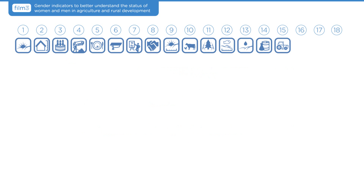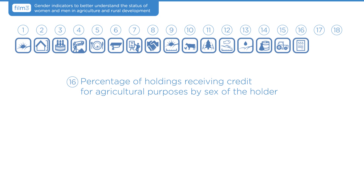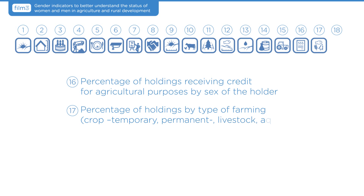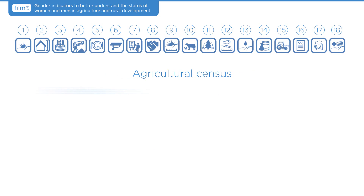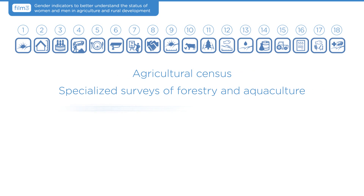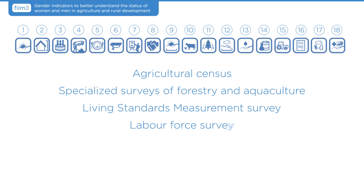The final three indicators are: 16. Percentage of holdings receiving credit for agricultural purposes by sex of the holder. 17. Percentage of holdings by type of farming — crop, temporary, permanent, livestock, aquaculture, and forestry — and sex of the holder. 18. Percentage of holdings with other gainful activity in the household by type of activity and sex of the holder. These indicators relate to the type of farming undertaken by female and male holders and the total income of the holder's household including all income sources. Most data needed can be obtained from the Agricultural Census, specialized surveys of forestry and aquaculture, and sometimes from the Living Standards Measurement Survey, Labour Force Survey, Household Consumption Survey, and Household Budget surveys.